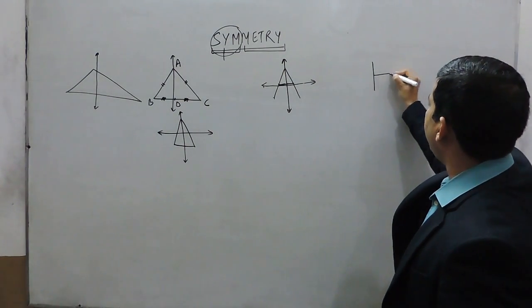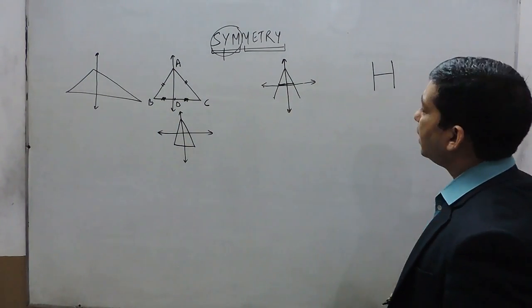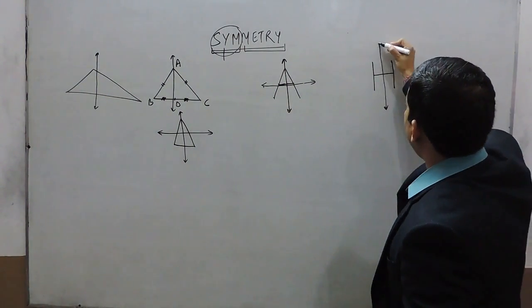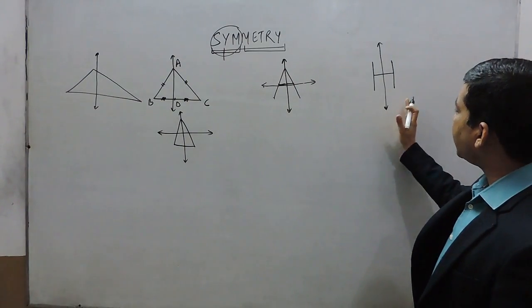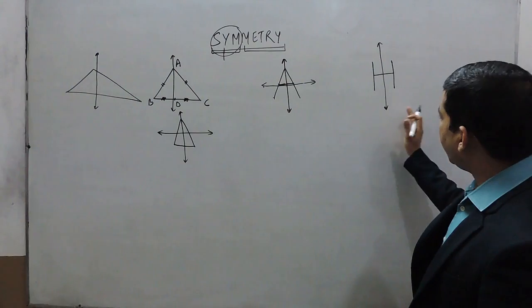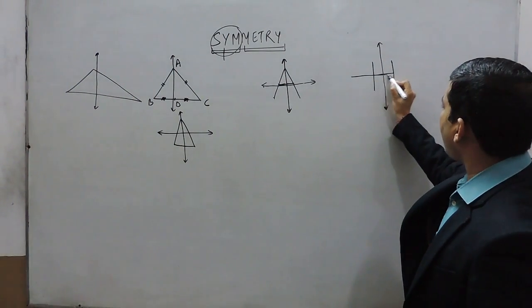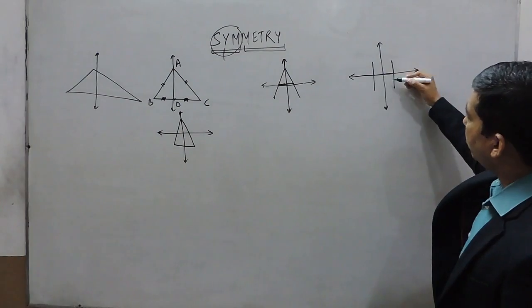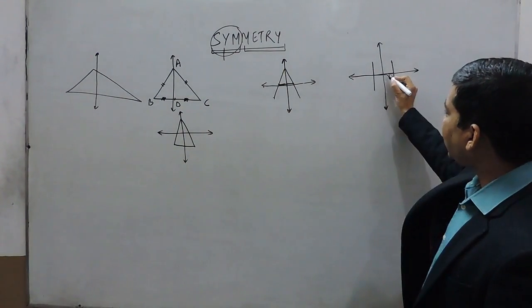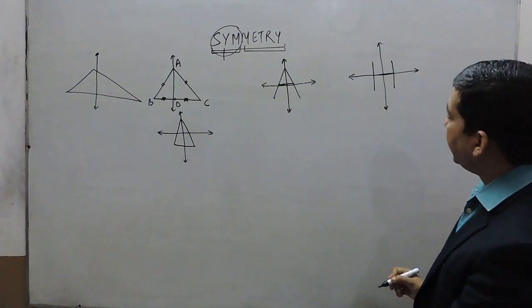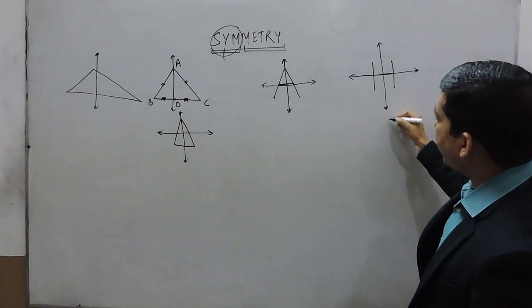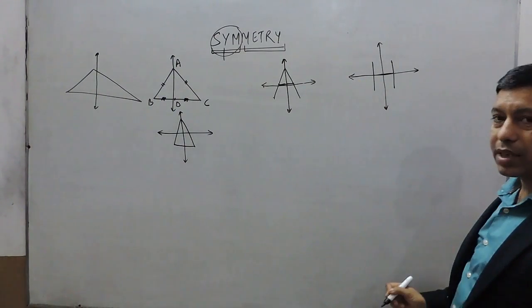Now we can take another alphabet like H. If I divide this H into two equal halves with a vertical line, we can say that alphabet H is symmetrical on the vertical line. If we draw a line horizontally, then H is also symmetrical on both sides. So H has twin symmetry — on the vertical side as well as on the horizontal side.